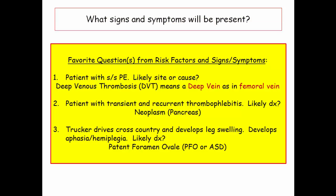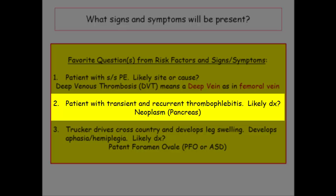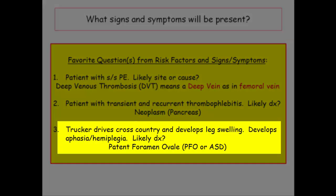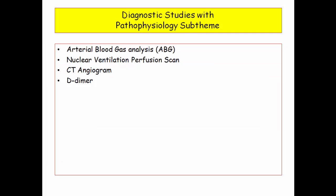Their favorite question combinations: first, patient with signs and symptoms of pulmonary embolism such as shortness of breath with leg swelling — they ask the site, which is a DVT in the deep vein such as the femoral vein. Second, patient with transient and recurrent thrombophlebitis — this is the migratory thrombophlebitis story, working backward to find the cause. Third, the truck driver with leg swelling who unfortunately develops a stroke — how does a venous clot cause an arterial stroke? It needs to traverse a PFO or ASD.